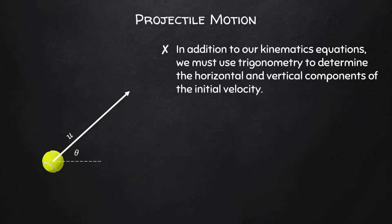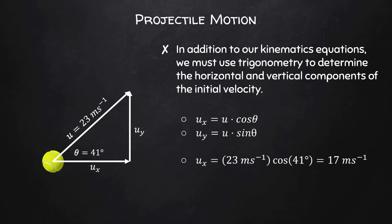Most of the calculations we'll do for projectile motion, we'll be using the kinematics equations that we already know. In addition to these, we'll have to use some basic trigonometry to determine the horizontal and vertical components of the initial velocity. The horizontal component of the initial velocity is the velocity times the cosine of the angle. The vertical component of the initial velocity is the velocity times the sine of the angle. If our initial velocity is 23 meters per second and our angle is 41 degrees, then the horizontal component of that initial velocity will be 17 meters per second and the vertical component of the initial velocity will be 15 meters per second.